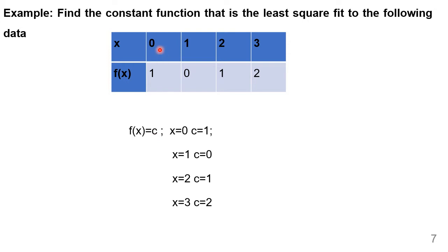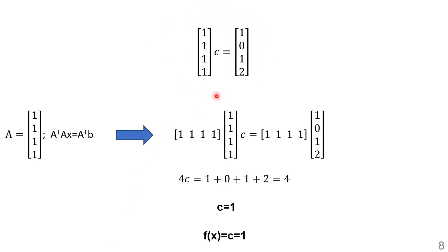Substituting the data points: when x=0, f(0)=c=1; when x=1, f(1)=c=0; when x=2, f(2)=c=1; when x=3, f(3)=c=2. This gives us four equations in c.